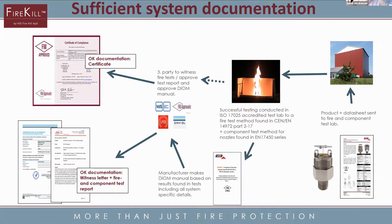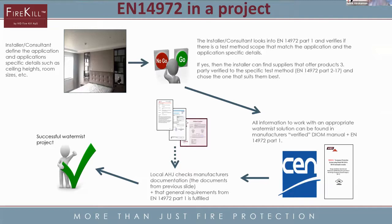This DIOM will be evaluated by a third party — could be FM Approvals, FAUDS, DNVGL, LPCB, etc. Then you get a certificate or a witness letter and a final component test report, and that way you are basically good to go. In a real project, the installer and consultant will look at what kind of application they have, then look into which parts they need. Then they can find the manufacturers of Watermist systems who can provide these codes. These manufacturers and the installer have to give the AHJ all the test reports, the certificates, etc. He evaluates whether this fulfills his requirements, and then you can start a successful Watermist project.